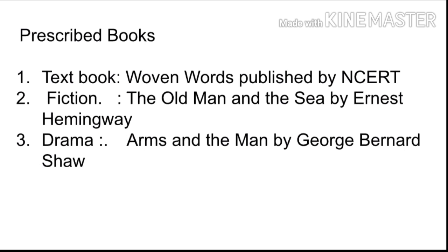Now I will move on to the prescribed books, which is very important. You have been given three books: the textbook 'Woven Words', published by NCERT; fiction — 'The Old Man and the Sea' by Ernest Hemingway; and drama — 'Arms and the Man' by George Bernard Shaw. These three textbooks have been given for this class. These three books are available on online platforms and also in the market — you can buy from both.